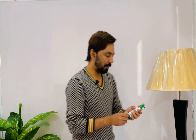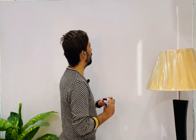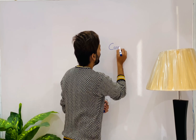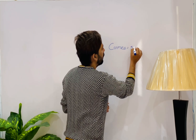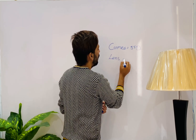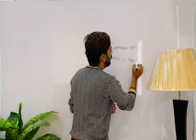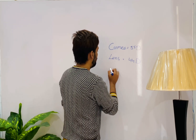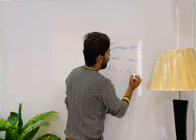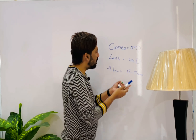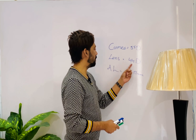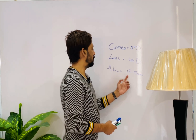Before learning about emetropization, we will discuss different parameters of refraction in the eye — the total power of the eyeball, the total power of the cornea, the total power of the crystalline lens, and the axial length. At birth, the cornea has a power of approximately 55 diopters, the crystalline lens has approximately 44 diopters, and the axial length is 15 to 17 millimeters.